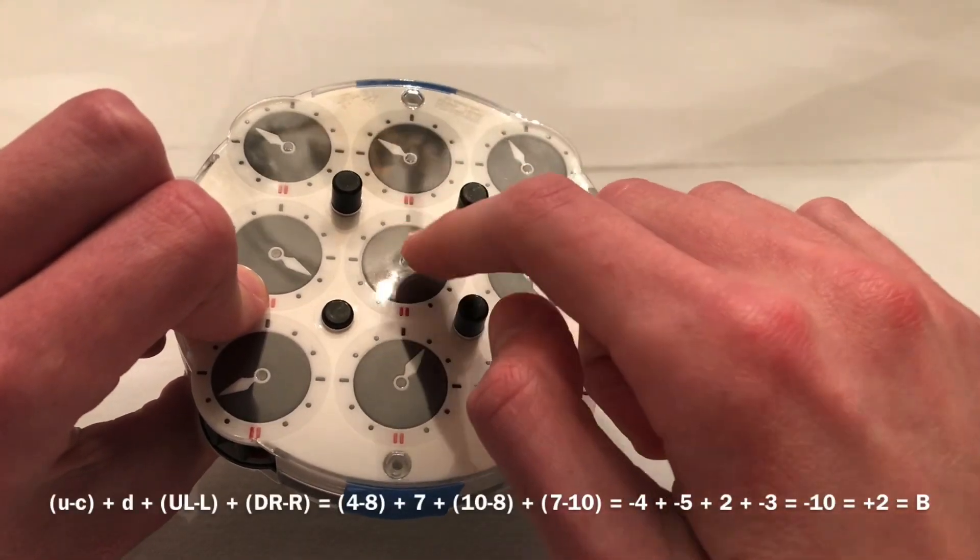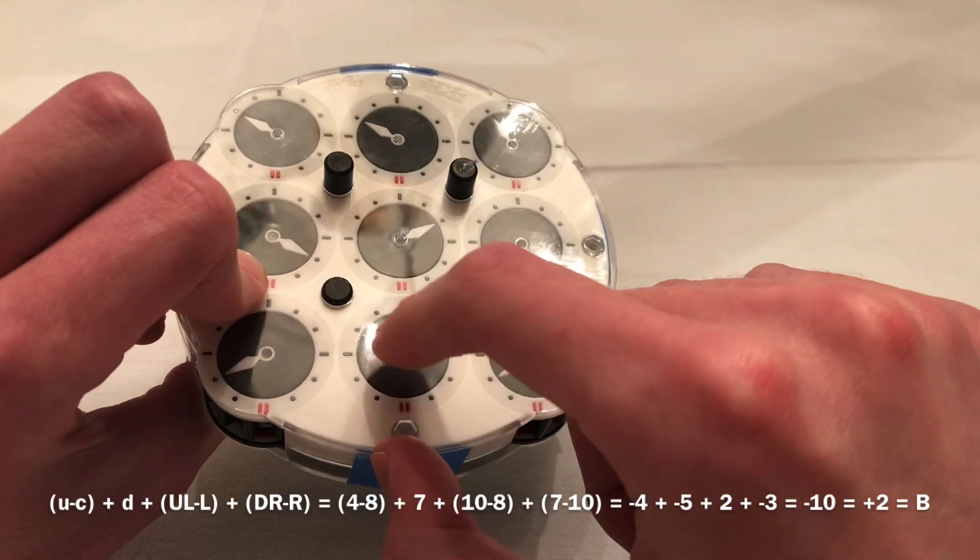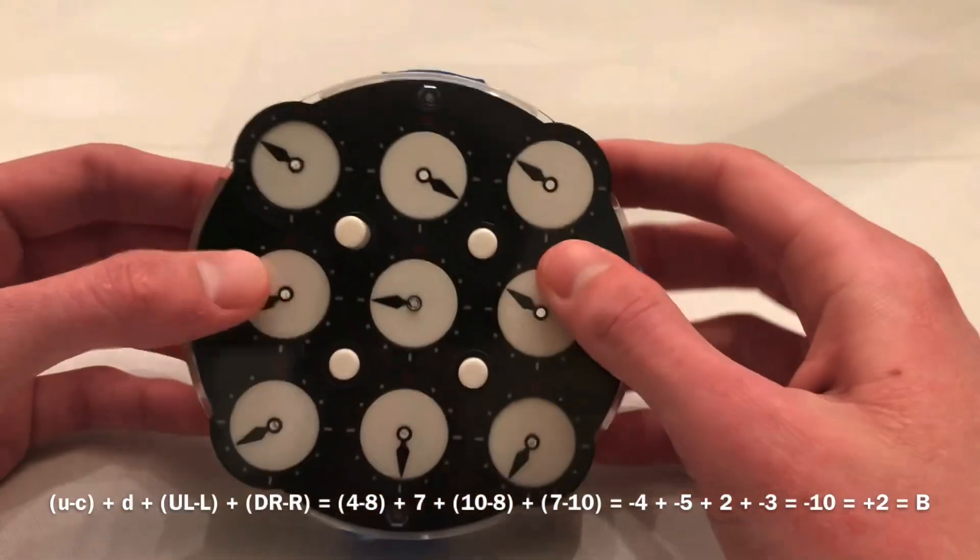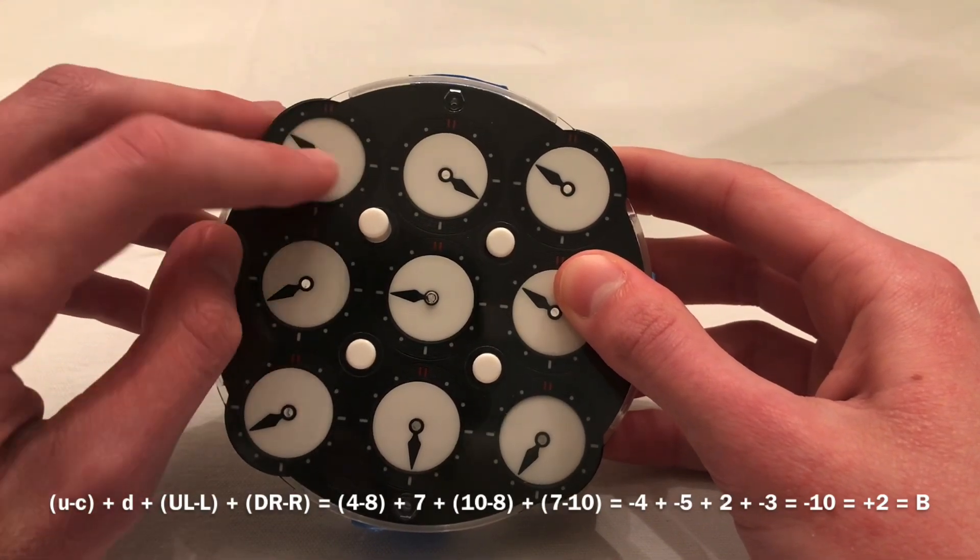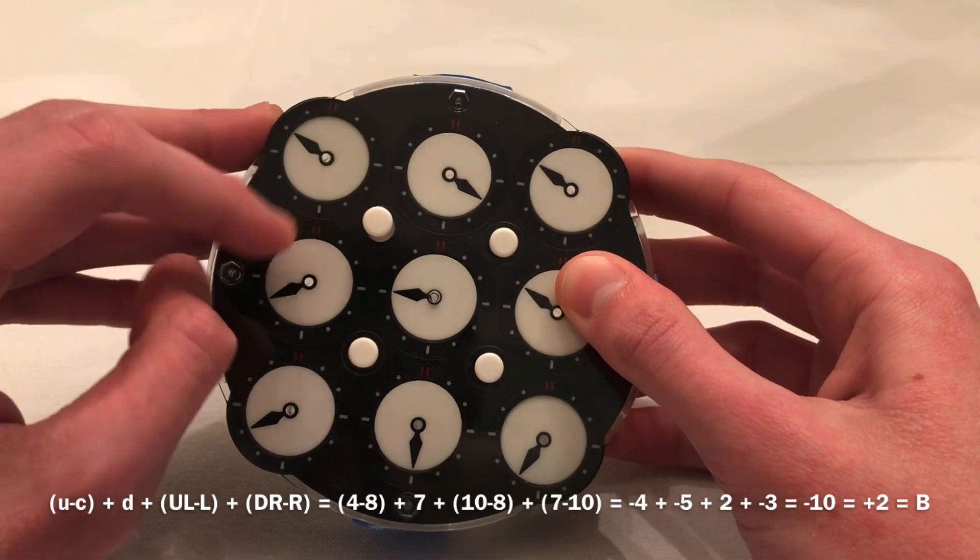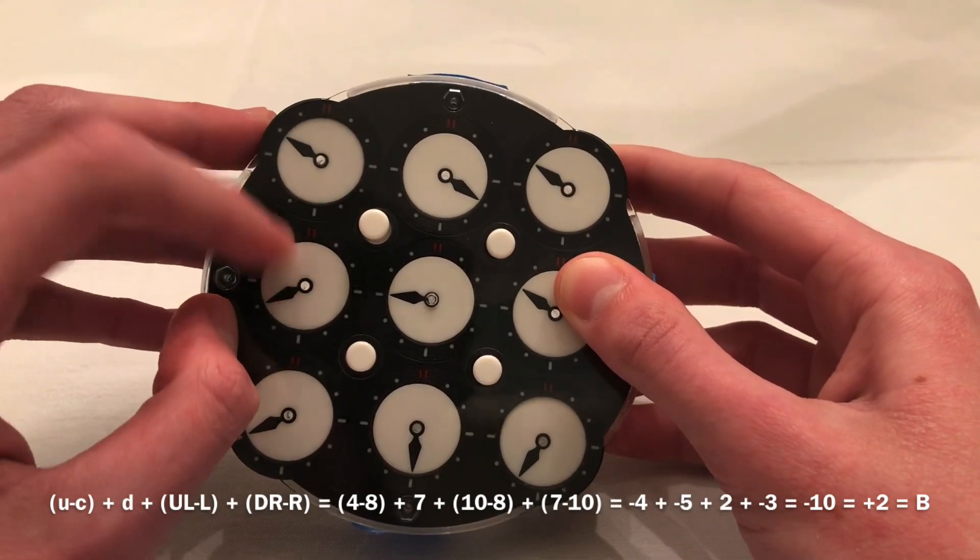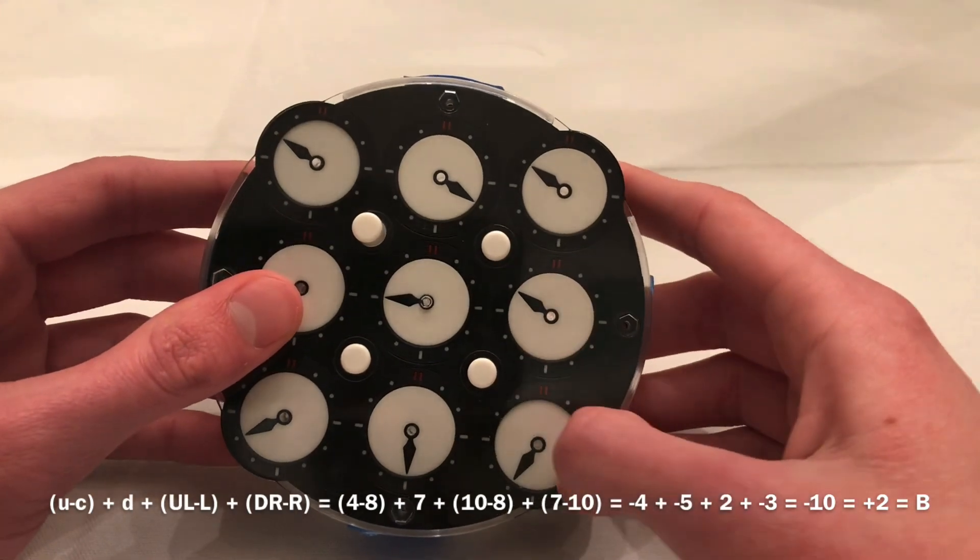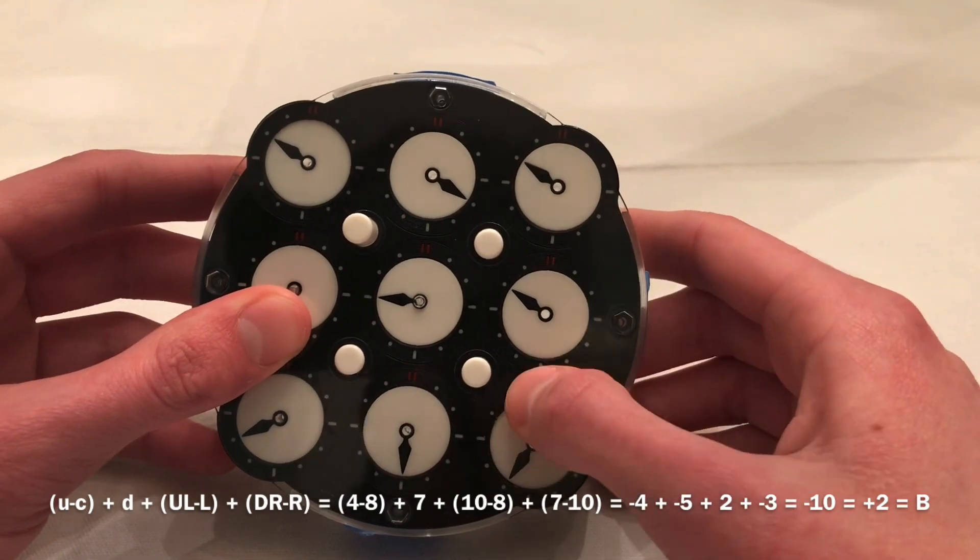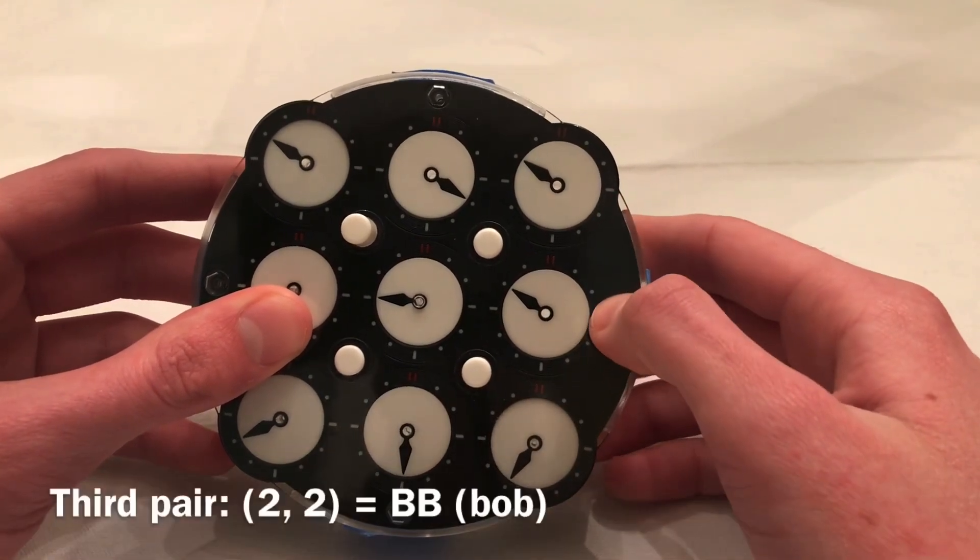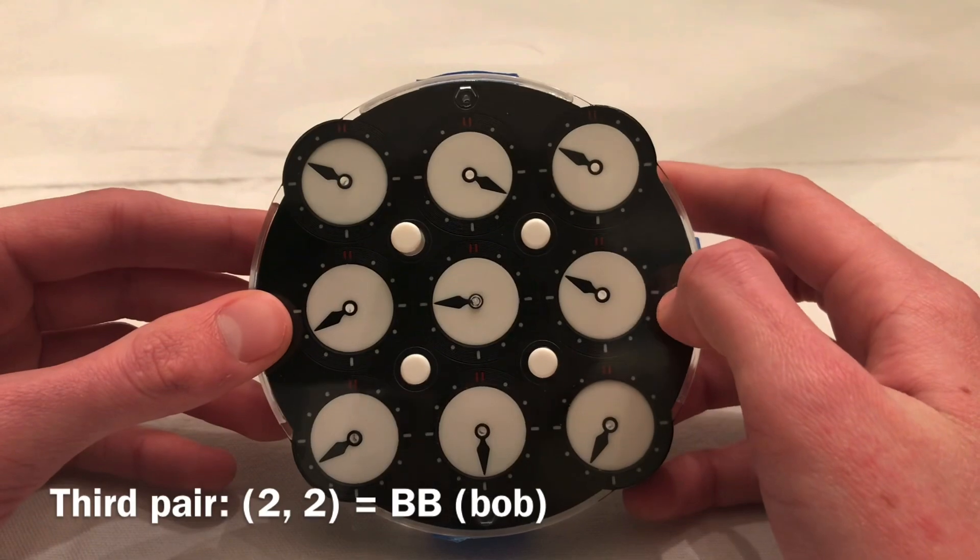And then you'd do u minus c, so negative 4. And then visualize where that would make d go, so it would go to 3. So, you'd visualize where ul would go with 3 added to it. So it would go to 1, and then you subtract this from it. So 1 minus 8 is negative 7, which is the same as 5. And then you'd visualize where dr would go with 5 added to it, and it would go to 12. So 12 minus 10 is 2, so b. So that whole last pair was bb, so you could use bob, for example, as your word.